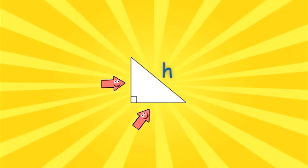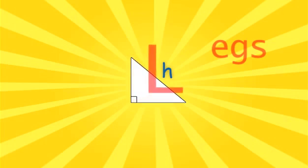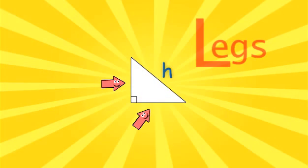Notice that the two sides that create the 90 degree angle form the letter L. L for legs. These are the legs of the right triangle.